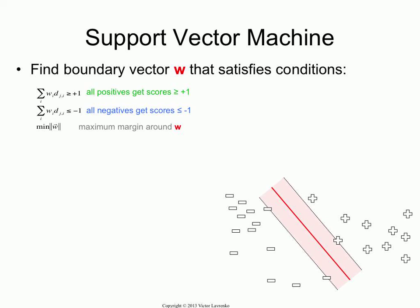There are multiple optimizations that have to take place, and there are many algorithms that do it. Basically, what all of them do is they come up with a solution that has the following form. The weight vector is the sum over all positive examples — you take the vector corresponding to each positive example, put some weight alpha_j on it, and that is a positive weight. Add them up to get some vector, and you do the same thing with the negatives.